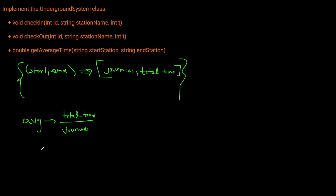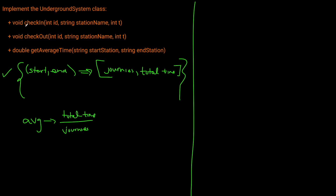So how do we track journeys and total time? We have check-in and check-out functions, and we need to use this data to update our metrics dictionary. We'll maintain a separate journey dictionary to track active journeys. This maps a user ID to a tuple of their start station and the timestamp they checked in at. Every time someone checks in, we store their ID with the station name and timestamp.